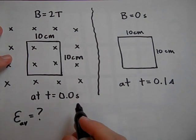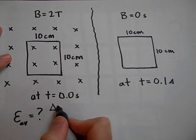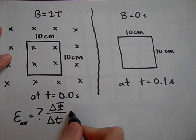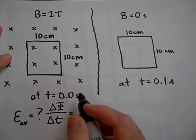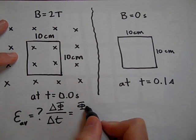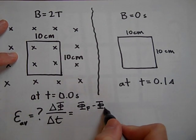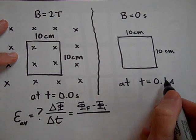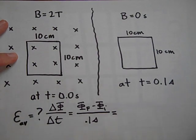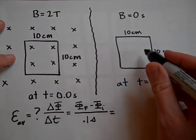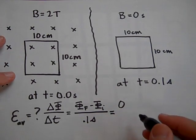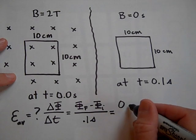The average EMF induced is going to be the change in flux over change in time — that would be flux final minus the flux initial, all over the change in time, which is 0.1 seconds. The flux final is zero — there is no flux through there, so it's zero Webers. The unit for flux is Webers.